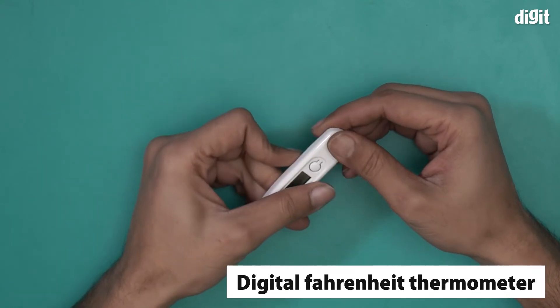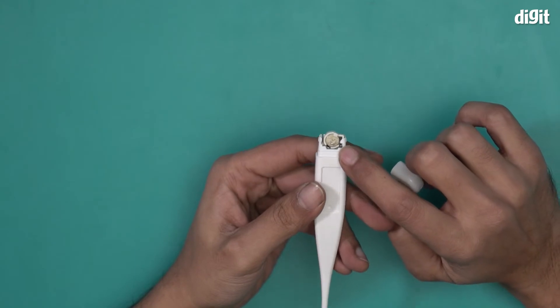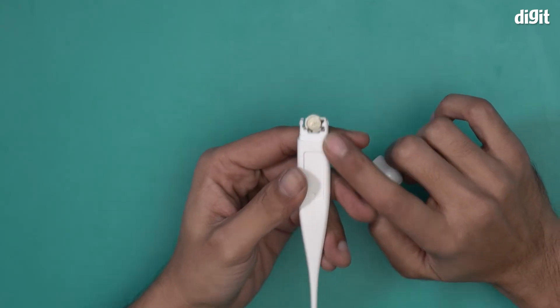Let's quickly check where the battery goes in. This is the 1.55 volt button size battery that powers this particular thermometer.